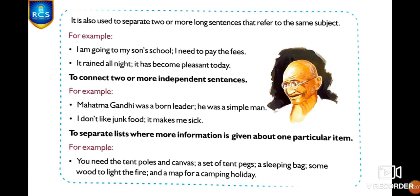A semicolon is also used to separate two or more long sentences that refer to the same subject: 'I am going to my son's school; I need to pay the fees.' It is also used to connect two or more independent sentences: 'Mahatma Gandhi was a born leader; he was a simple man.' And to separate lists where more information is given about one item: 'You need the tent poles and canvas; a set of tent pegs; a sleeping bag; some wood to light the fire; and a map for a camping holiday.'